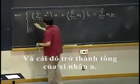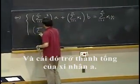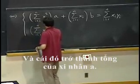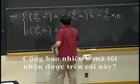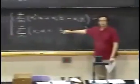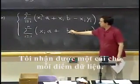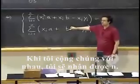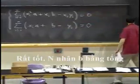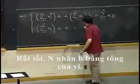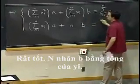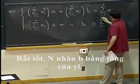And that one becomes sum of xi times a, plus how many b's do I get from this one? Well, I get one for each data point. When I sum them together, I will get n. Very good. So n times b equals sum of yi.